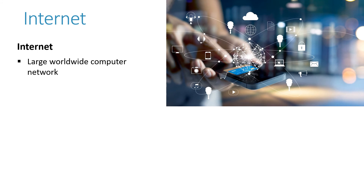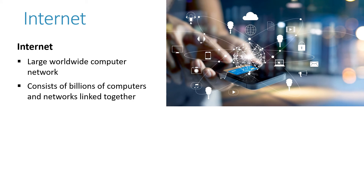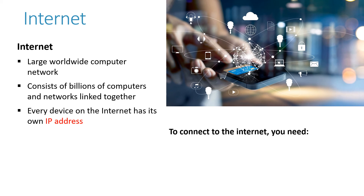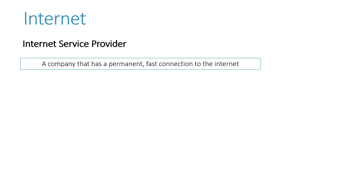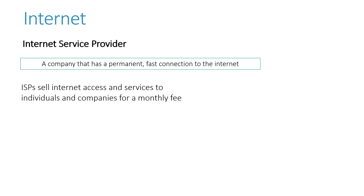Next, we need the internet. Remember, it's a large worldwide computer network. It consists of billions of computers and networks linked together. Every device on the internet has its own IP address, which means Internet Protocol address. To connect to the internet, you need an internet service provider and an internet connection. An ISP is a company that has bought, or pays rental for, a permanent fast connection to the internet. They sell you a rental so that you can tap into their connection and be connected to the internet via them. You usually pay a monthly fee for this.